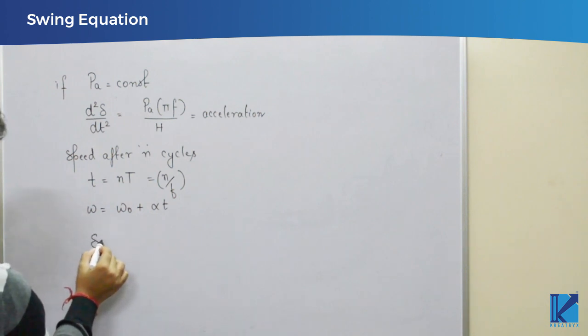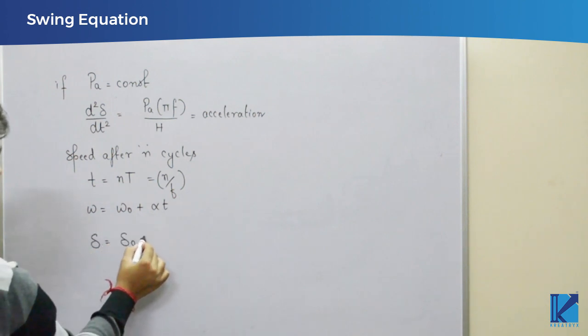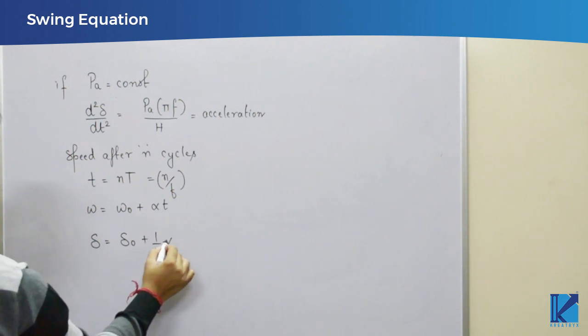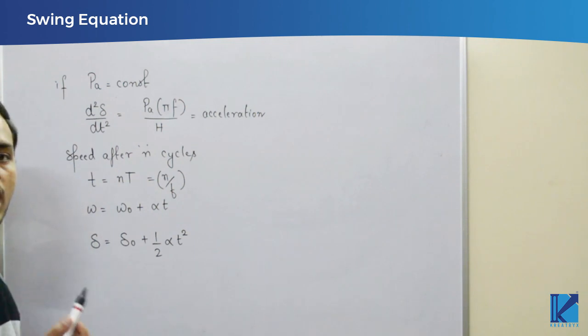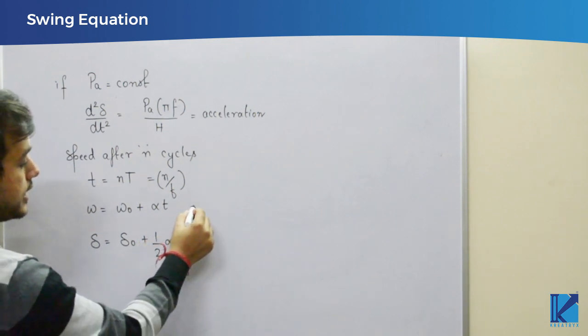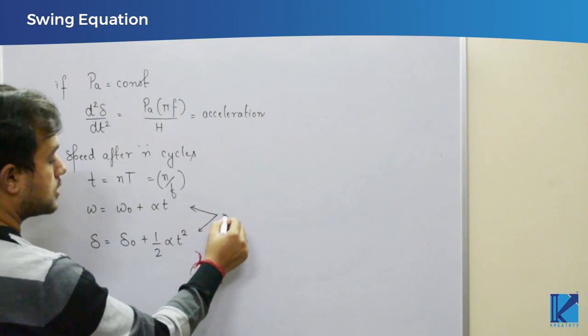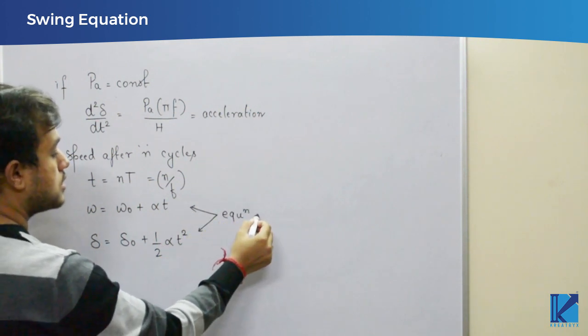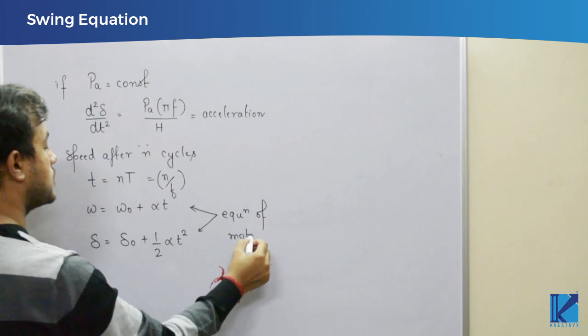Similarly, we can find out the new power angle delta equal to delta naught plus half alpha t square. That is the speed and the power angle after n cycles. So, here I have just used two equations of motion. These equations are to be used.